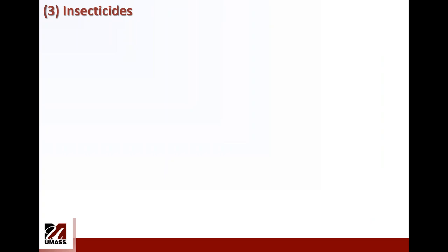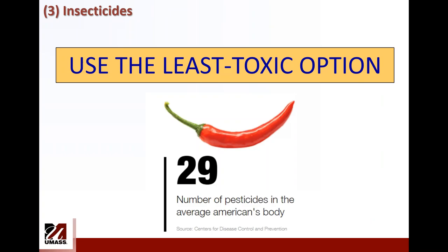The third component is insecticides. IPM also means applying insecticides when needed, and for spotted wing drosophila, the bad news is that you have to spray. Spotted wing drosophila is susceptible to many materials, but timing of application and coverage are very important for management. My recommendation would be to use materials that are the least toxic to non-targets, including pollinators, but the key is to determine when to spray and to really have good coverage.